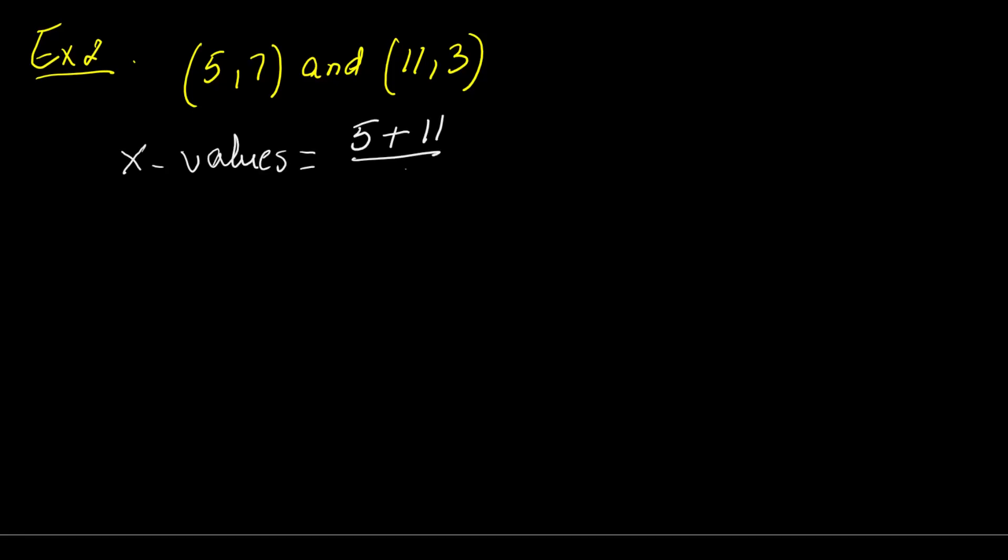Let's find the midpoint between the points (5, 7) and (11, 3). Start with the x values. Add 5 plus 11, that's 16. Divide 16 by 2, you get 8. Now for the y values. Add 7 plus 3, that's 10. Divide 10 by 2, you get 5. So the midpoint is (8, 5).